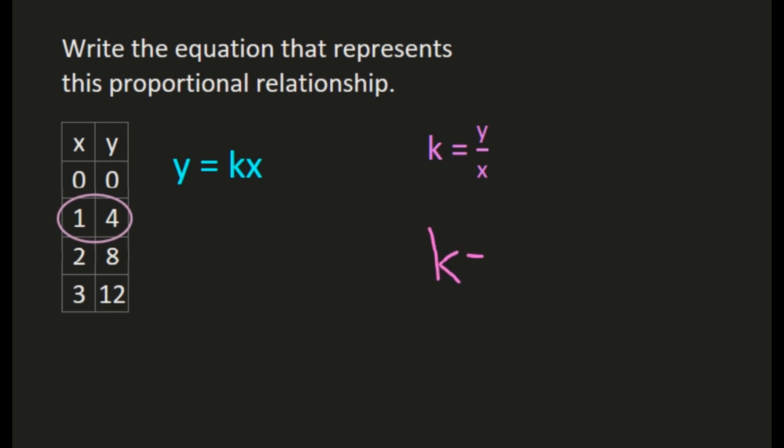So when I calculate my constant of proportionality, I'm going to take my y value of 4 and plug it in for y. I'm going to take my x value of 1 and substitute it for x, and now I have 4 over 1, or 4 divided by 1, which is 4.